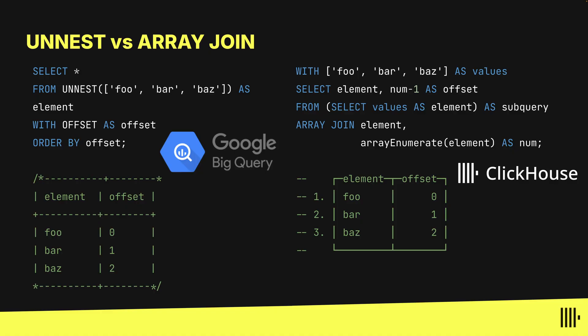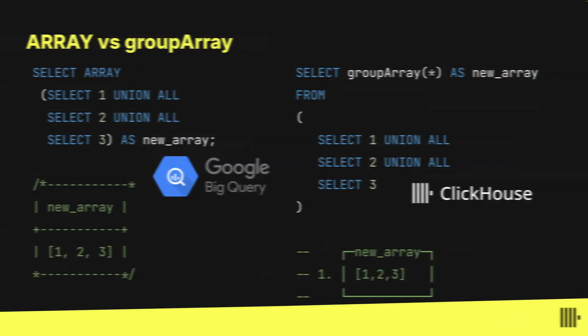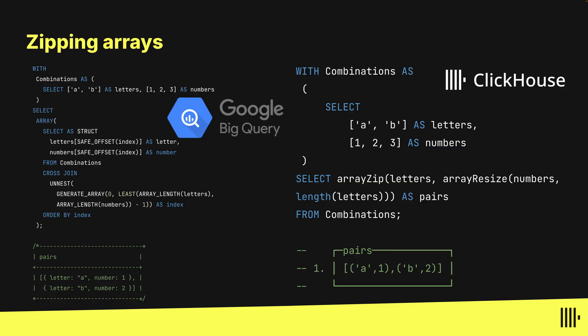When it comes to querying data, both BigQuery and ClickHouse support standard SQL. You'll find that ClickHouse sometimes uses different names for functions — for example, unnest is array join, and array is group array. ClickHouse also has a big selection of array functions, so you might find that you can simplify your queries.